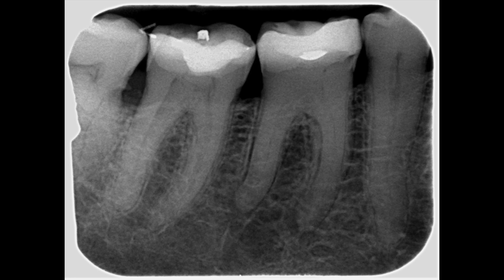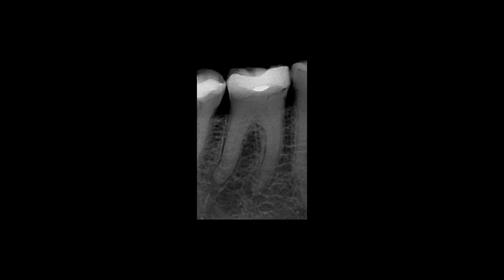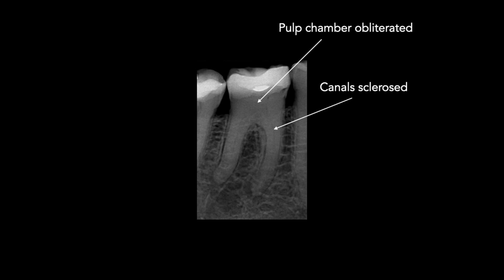Here you can see the pre-operative radiograph of the mandibular right first molar. The tooth is associated with periapical periodontitis and is symptomatic; it's scheduled for root canal treatment. You can see that the pulp chamber is almost completely occluded with dentine, which is going to make locating the root canal orifices more challenging than usual. The root canals themselves are almost imperceptible on the radiograph, and sclerosed root canals are going to be more difficult to prepare and taper.